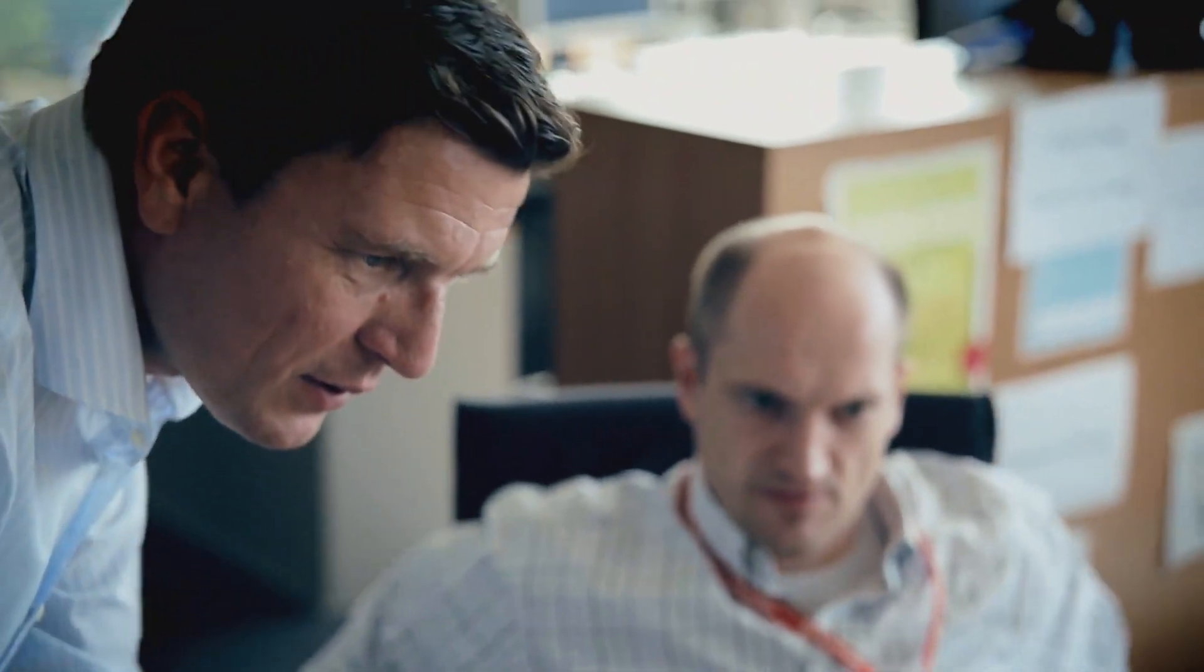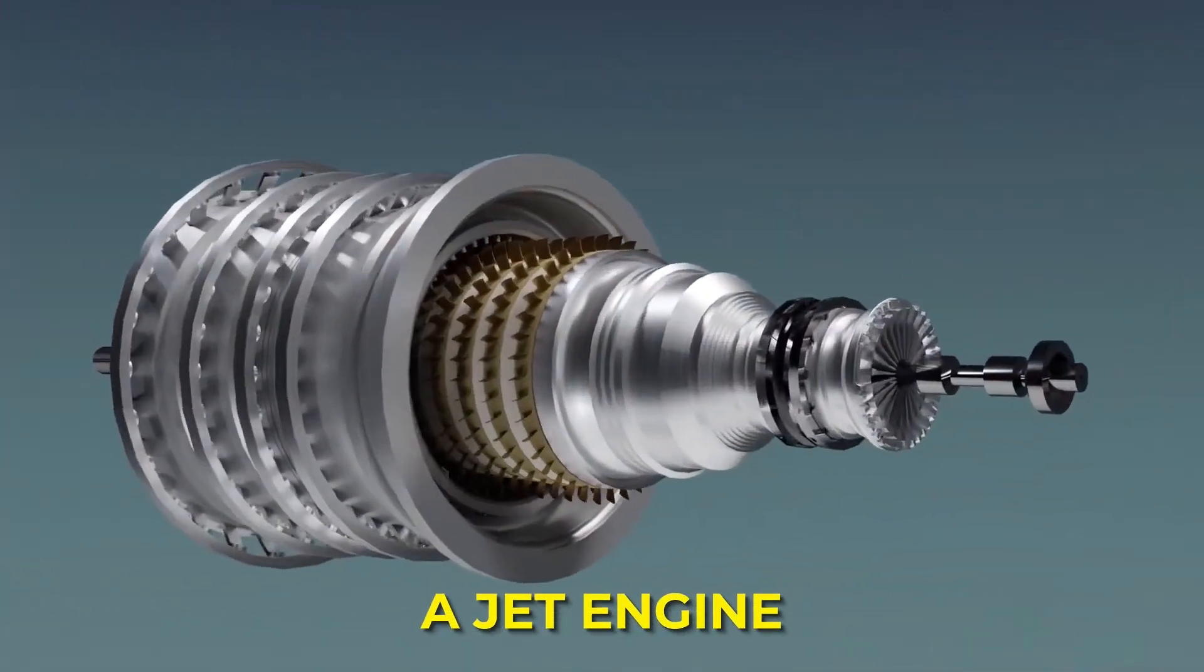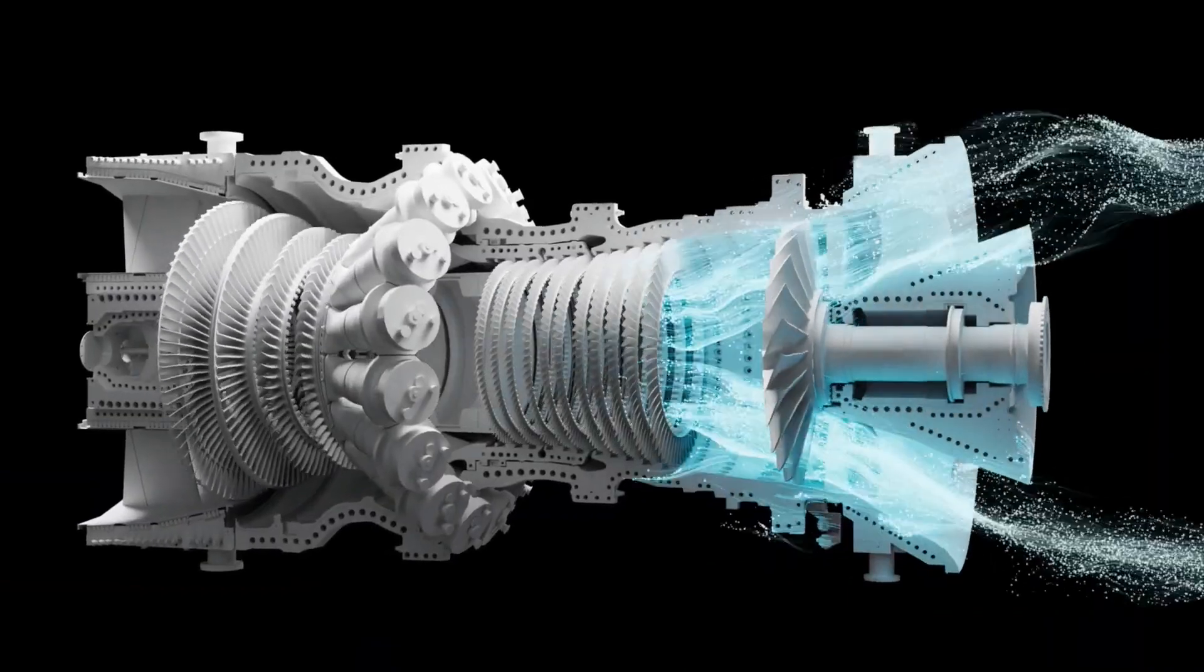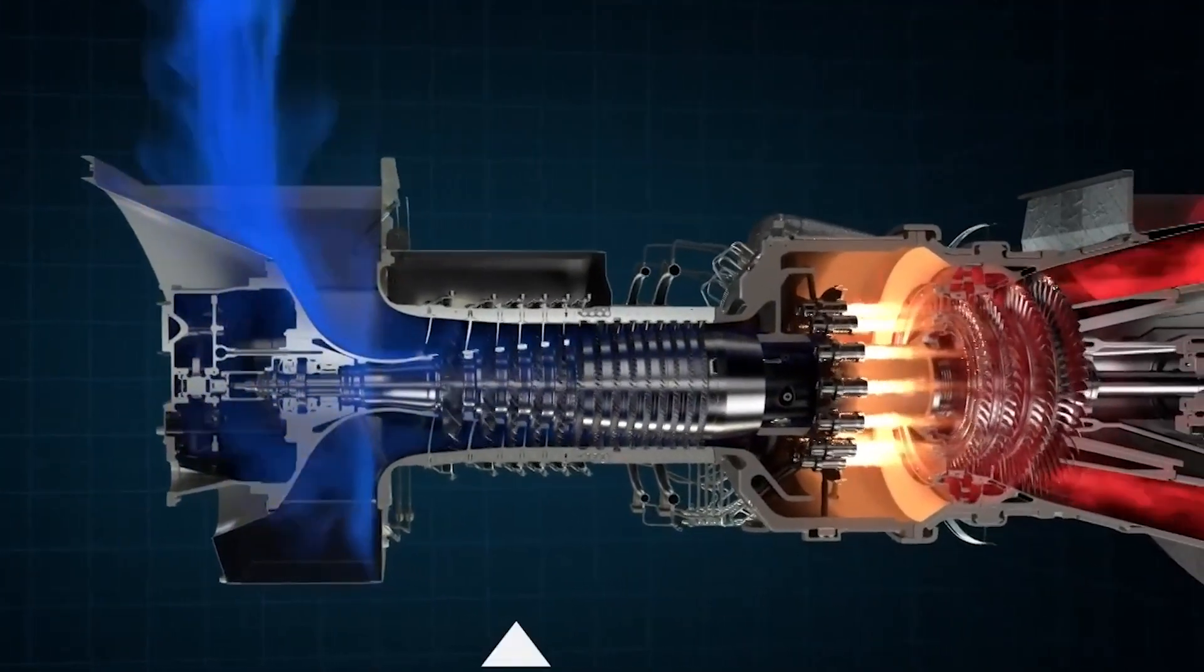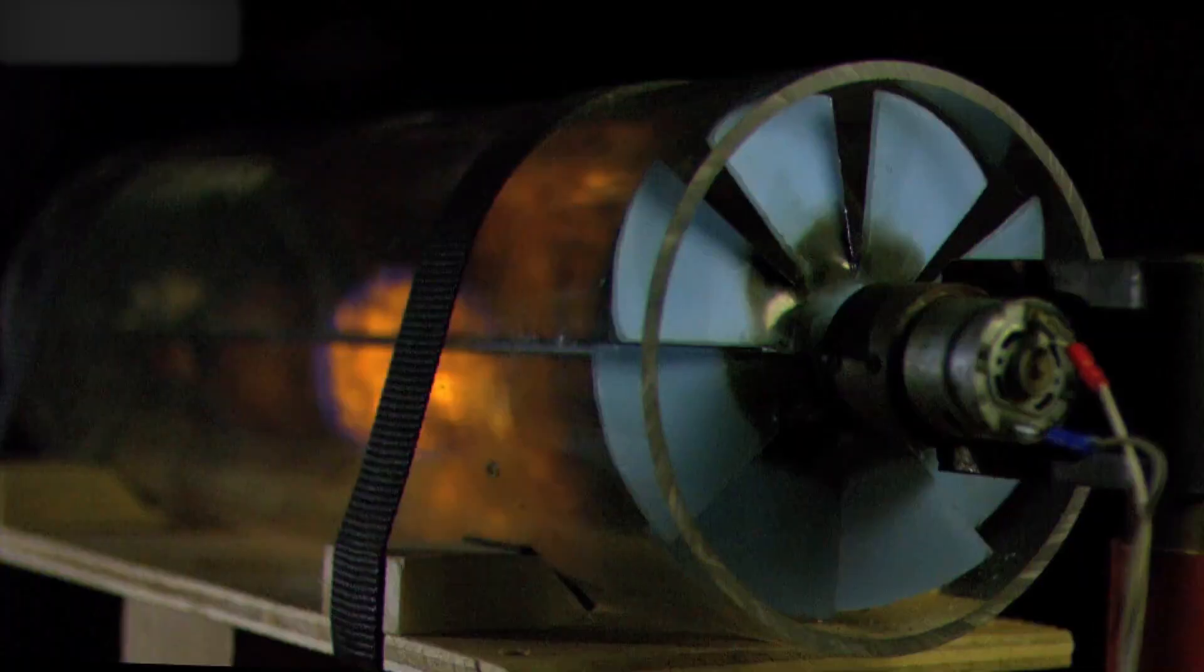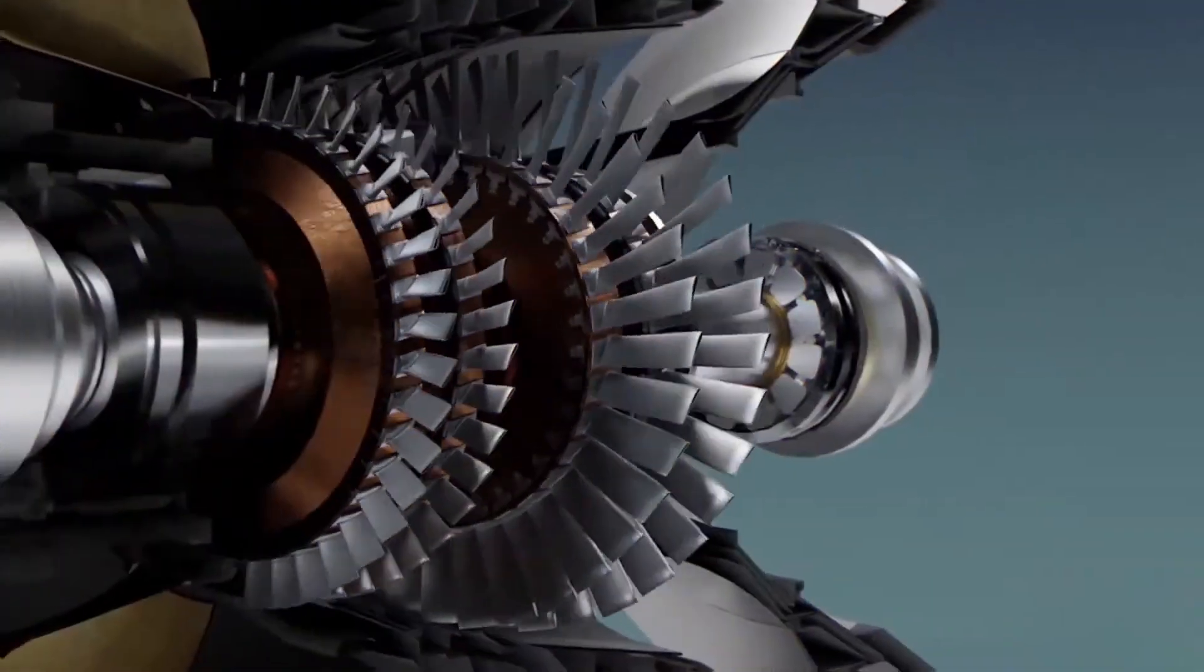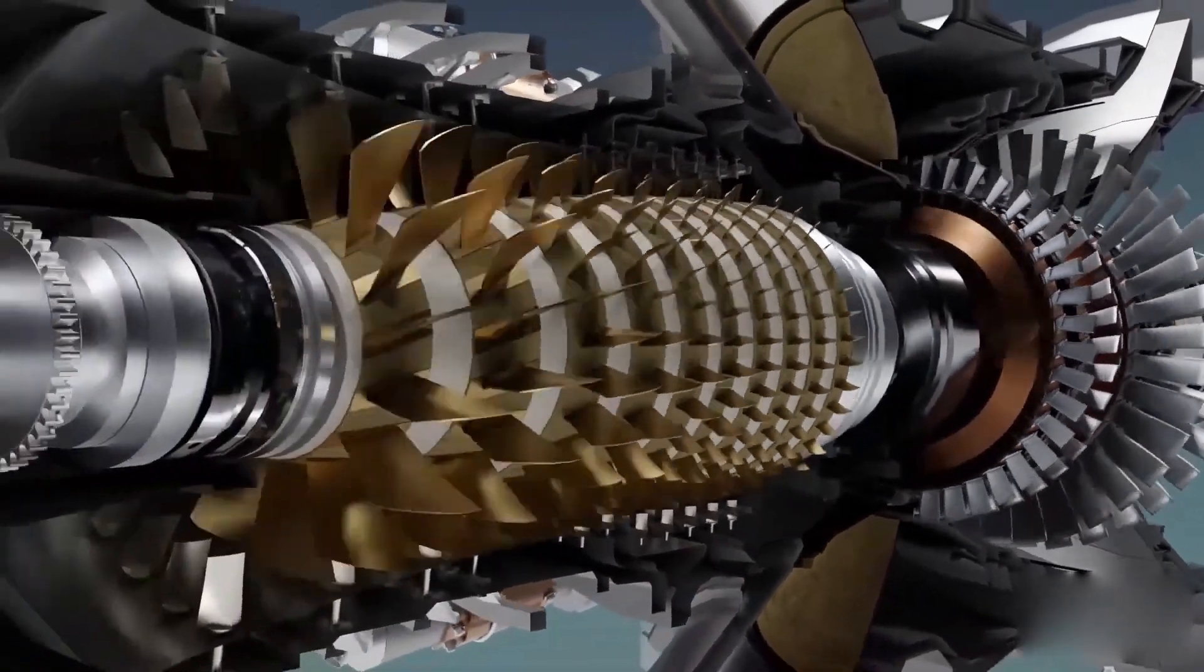The concept behind it is surprisingly straightforward. The gas turbine operates in a way that's almost identical to a jet engine. Air is drawn in and compressed to high pressure. Then, natural gas is injected and mixed with the air inside a combustor. The mixture ignites, producing extremely hot, high-pressure gas. That gas races through rows of turbine blades, spinning them at incredible speed.